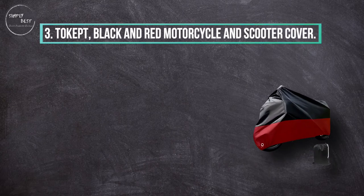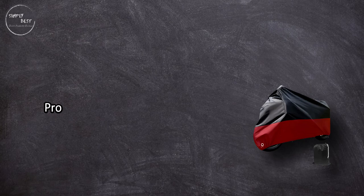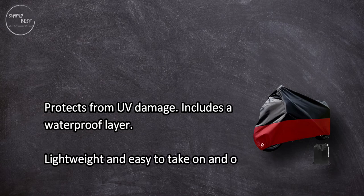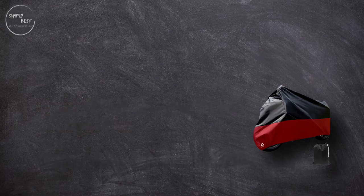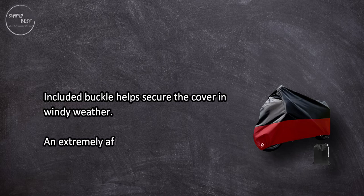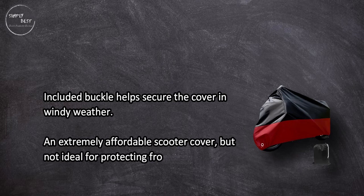Black and red motorcycle and scooter cover. Protects from UV damage, includes a waterproof layer, lightweight and easy to take on and off. Included buckle helps secure the cover in windy weather. An extremely affordable scooter cover, but not ideal for